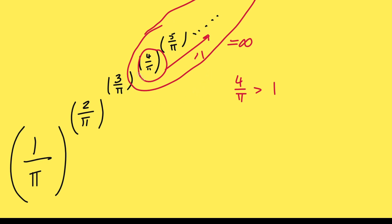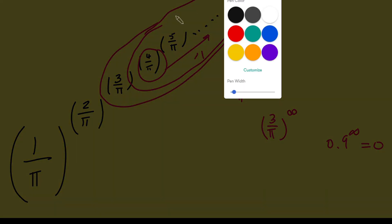So we've got 3 over pi to the power of infinity to consider next. Well, now the trick is that pi is bigger than 3, so 3 divided by pi is going to be less than 1, so it'll be like 0.9 or something. And so 0.9 to the power of infinity is going to equal 0, because if you repeatedly multiply a number that's less than 1 by itself, you're going to get closer and closer to 0. So far we've got that this guy here is just 0.